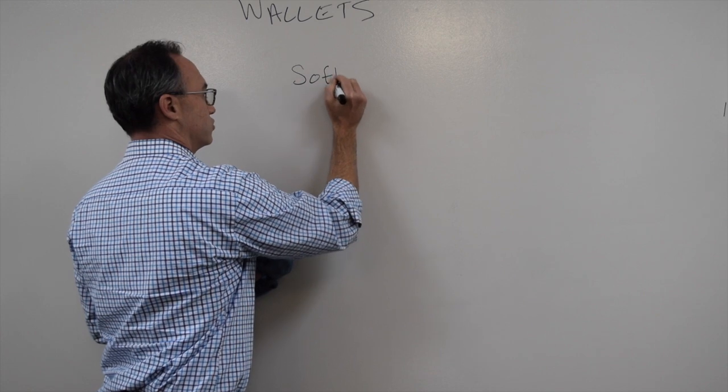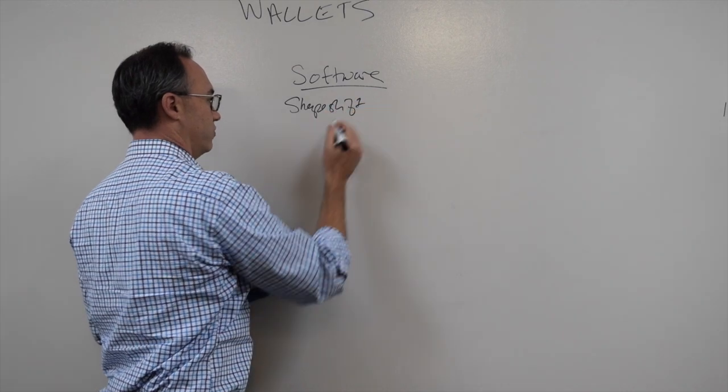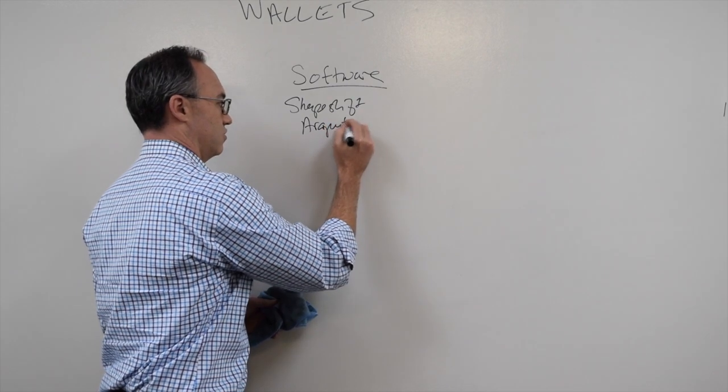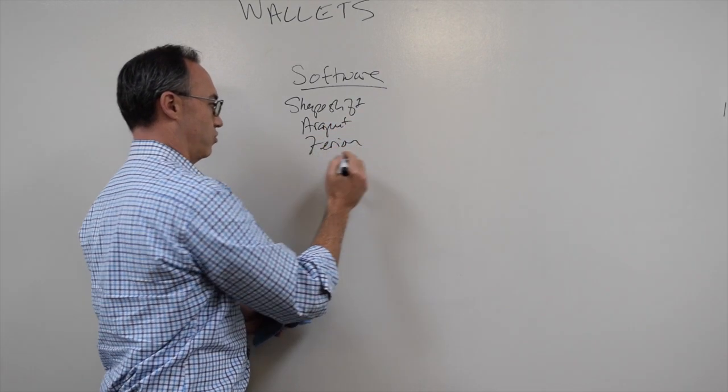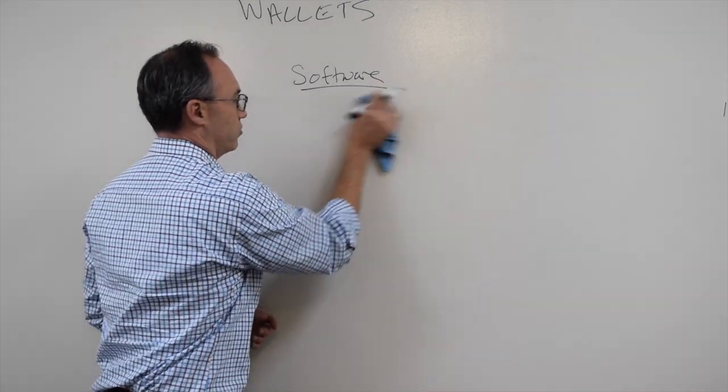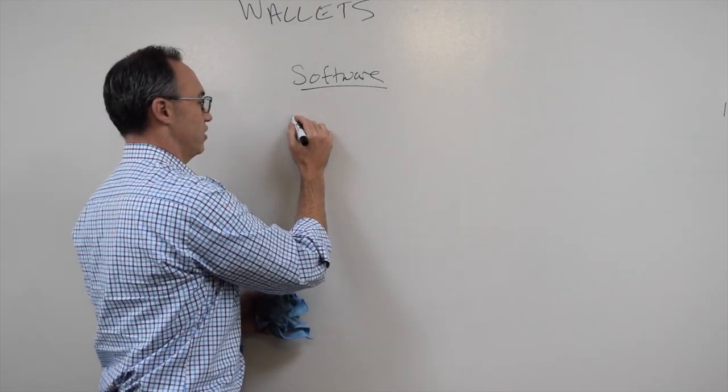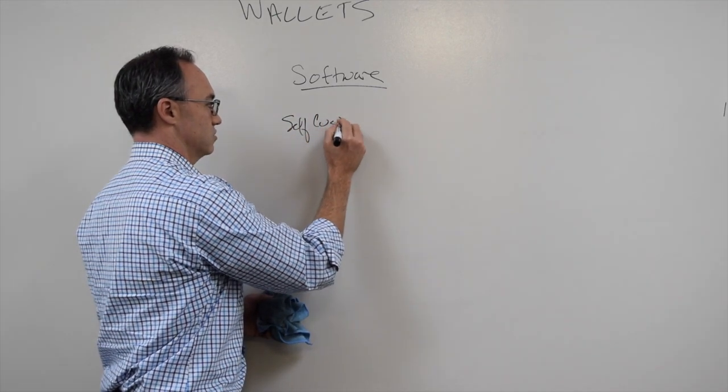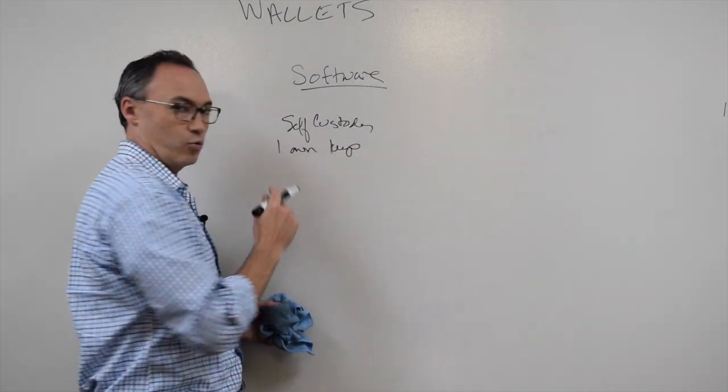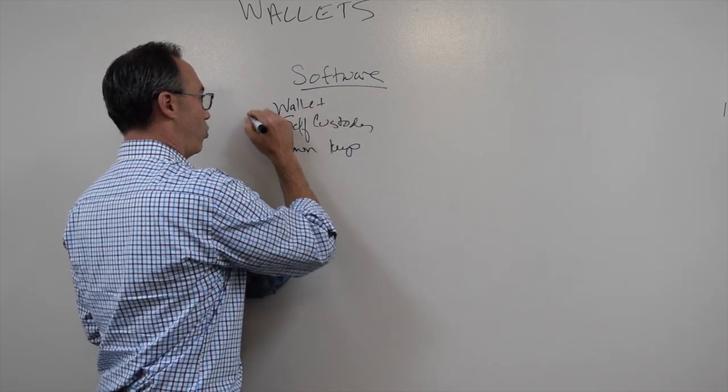So these software wallets are being developed. ShapeShift is one of them, and several others. There's Argent, Zerion is an interaction tool where they might hold your assets. You might be able to hold your tokens in them. But what you can also do is interact. So they provide you some level of self-custody. I own my keys, which means I can transact.